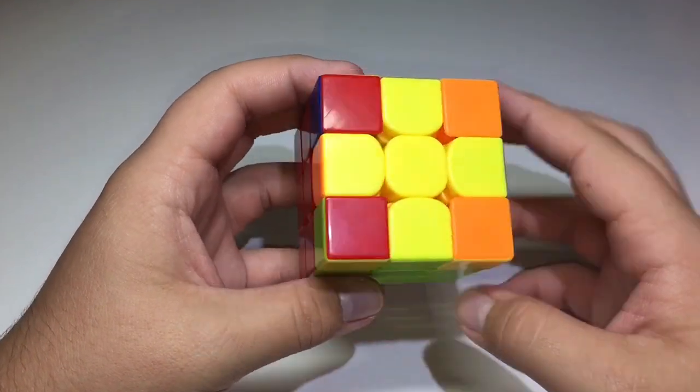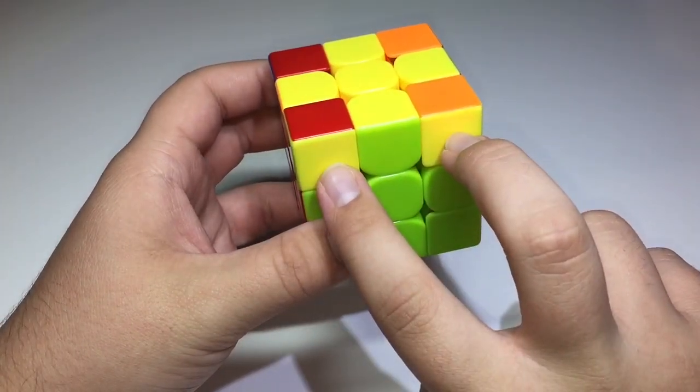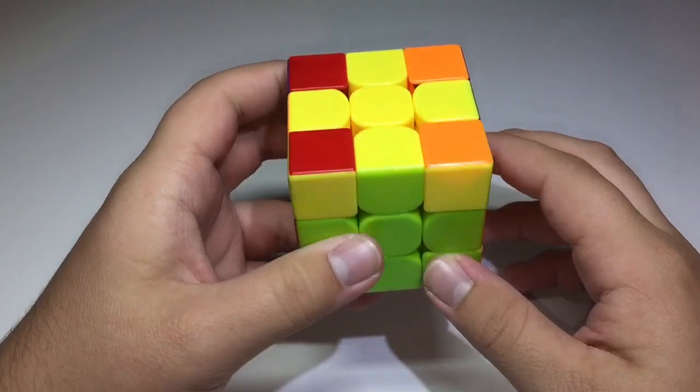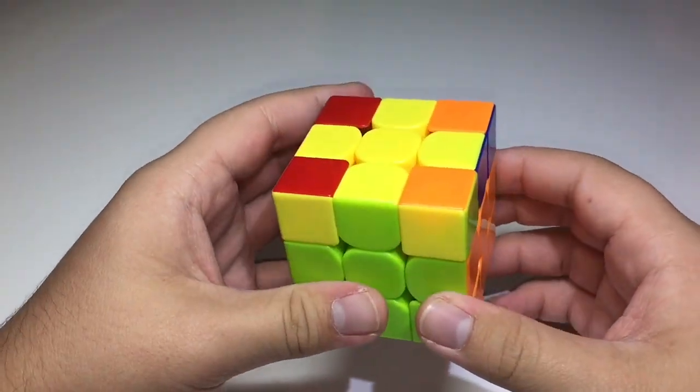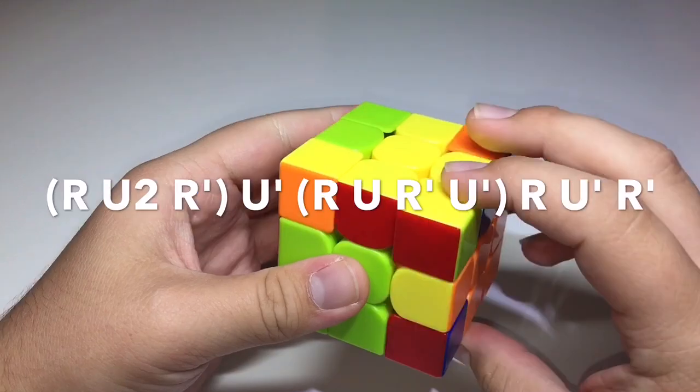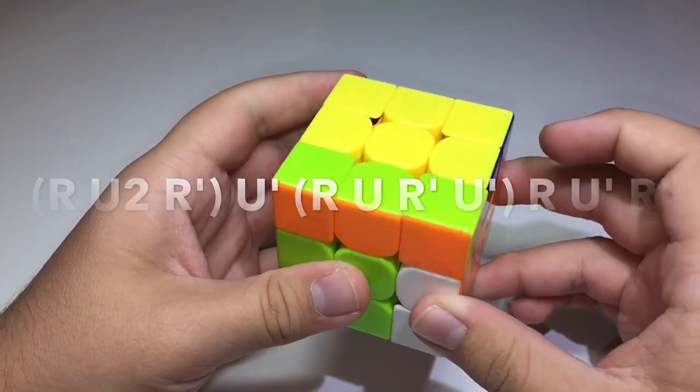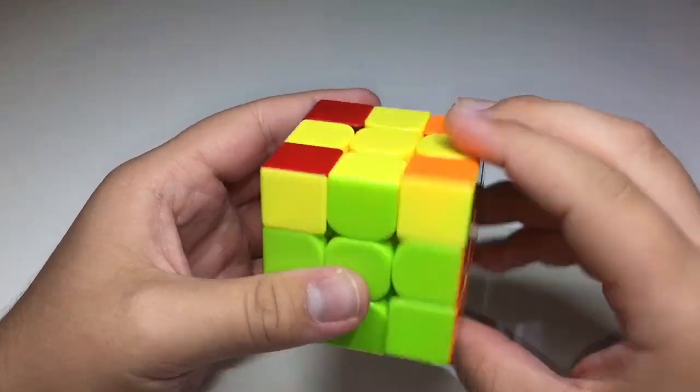And the third case is this one. So you have the yellow cross, the headlights right here, and the headlights in the back, and it's performed like this. And performed fast, it looks like this.